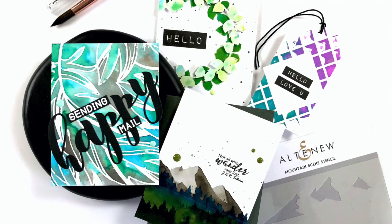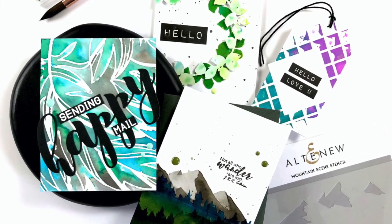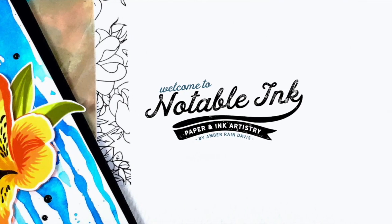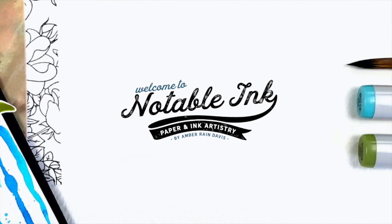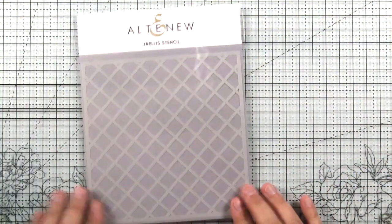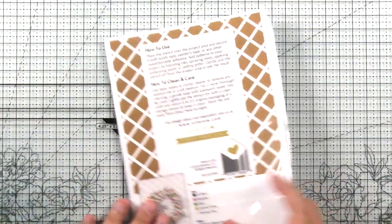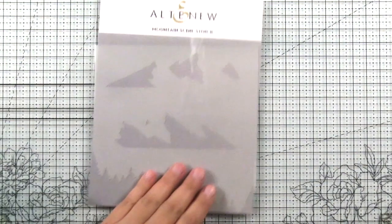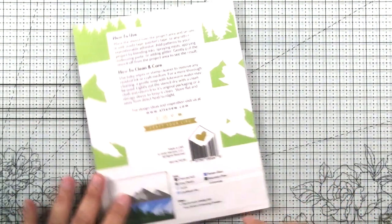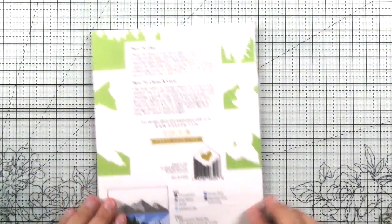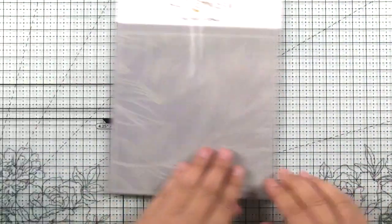Altenew just released creative cutouts and we have some new enamel dots also. I'll do a quick run through of the new products that I'm going to use today. This is Trellis stencil which pairs beautifully with all sorts of projects. This is the mountain scene stencil which I think is really unique and I absolutely loved it so much more than I thought I was going to.